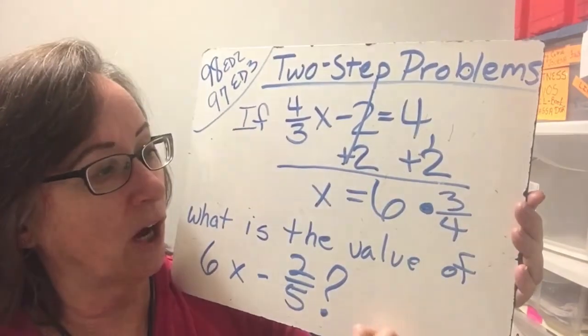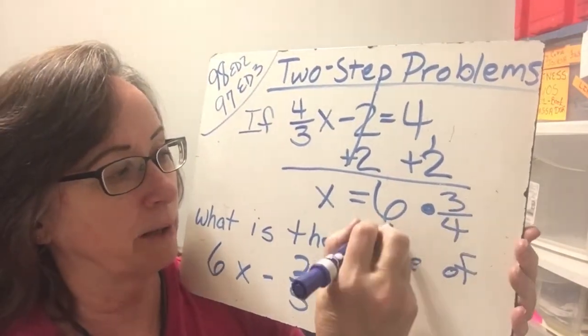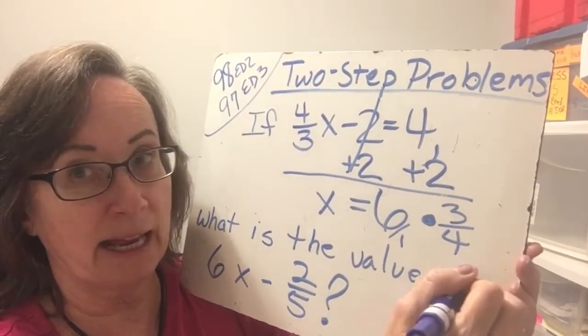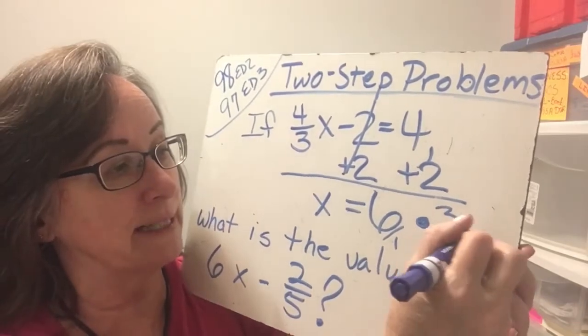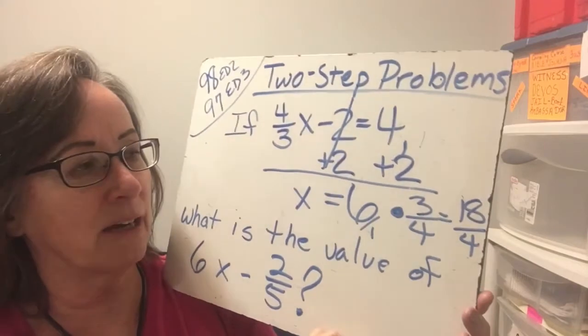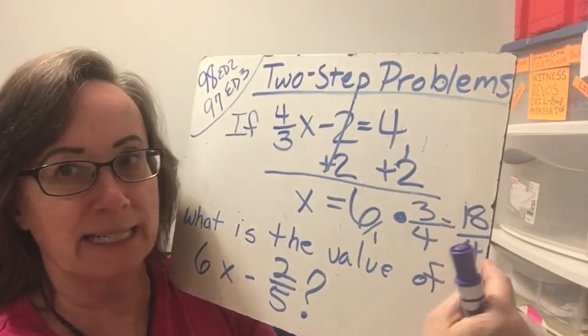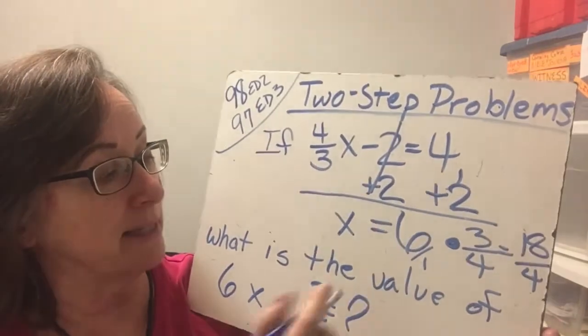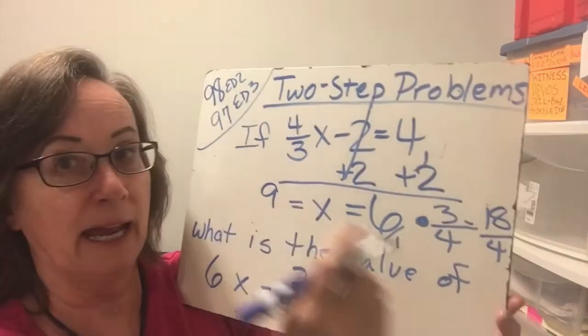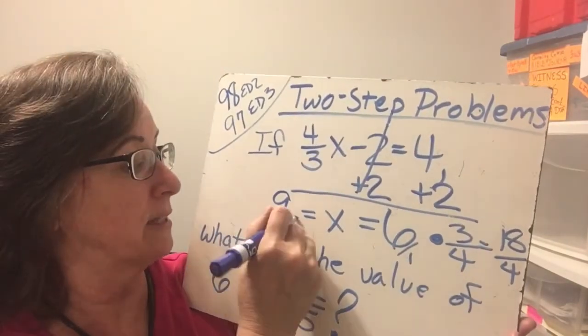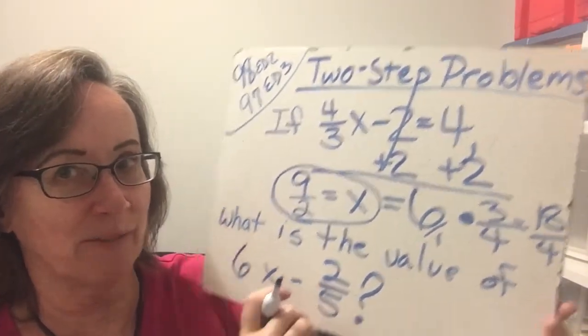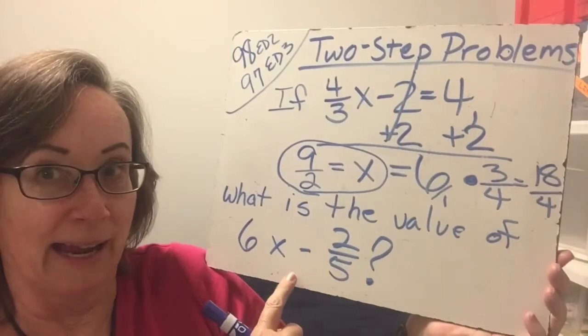x is equal to, now 18 over 4, because remember that 6 is a 6 over 1. I could cancel the 6 and the 4, or I could just go ahead and say it's 18 over 4, but that needs to be simplified. Can I go ahead and divide both the 18 and the 4 by a 2? And the answer is yes. So x is equal to 18 divided by 2 is 9, and 4 divided by 2 is 2. So x is equal to 9 halves.